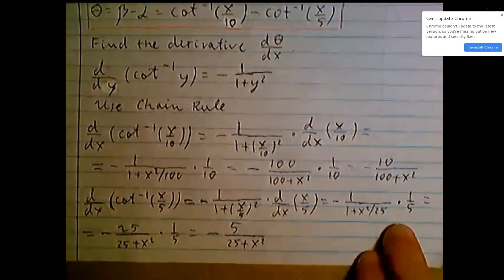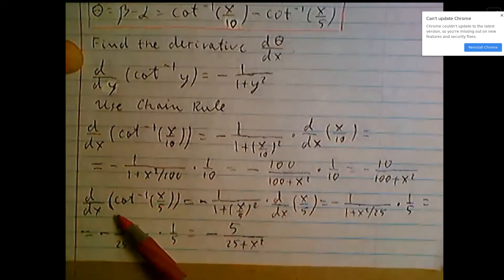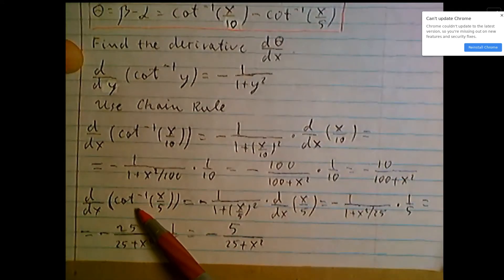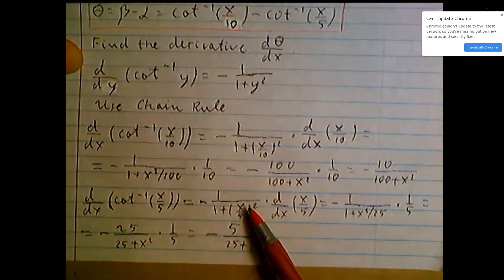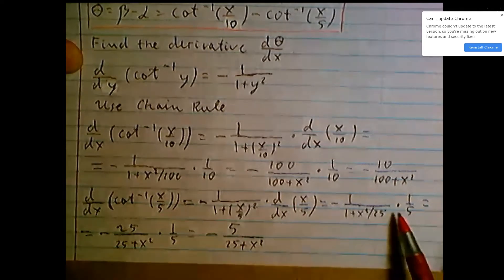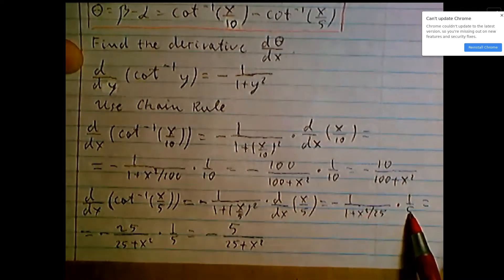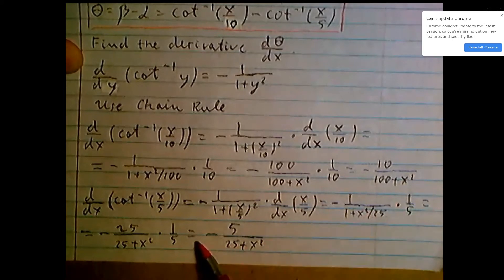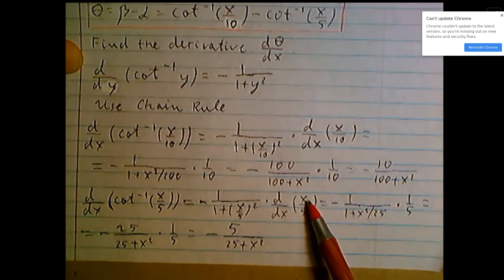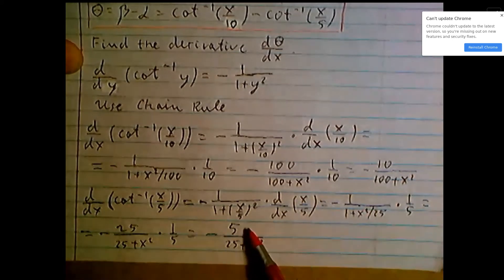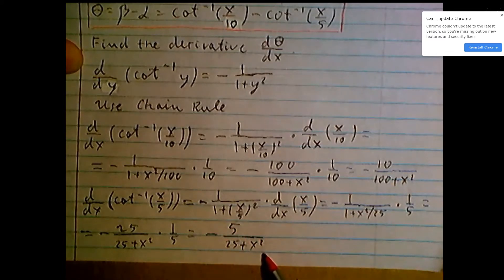Similar, derivative d/dx of inverse cotangent of x over 5, use chain rule to transform and simplify. Derivative of x over 5 is 1 over 5, so it will be expression minus 5 over 25 plus x squared.